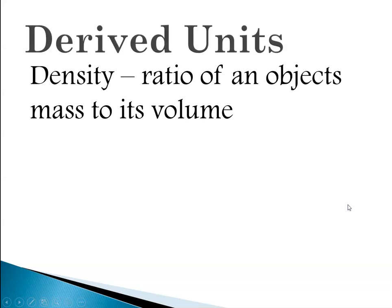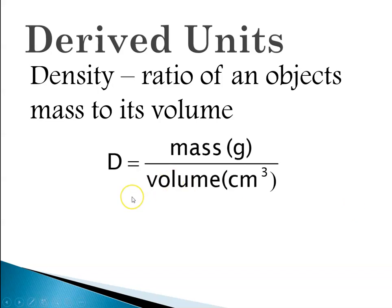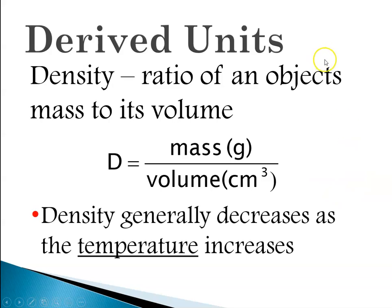Some other derived units that you might have encountered: density, which is a ratio of an object's mass to its volume. So density you learned at the junior high is mass per unit volume and so its unit would be grams per centimeter cubed. So again it's a complex unit, it's based upon mass and volume, and volume is based upon length. So density in general decreases as temperature increases.